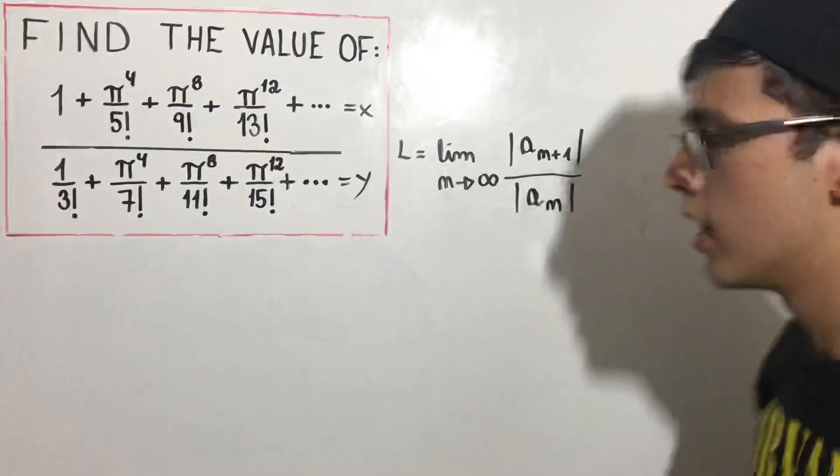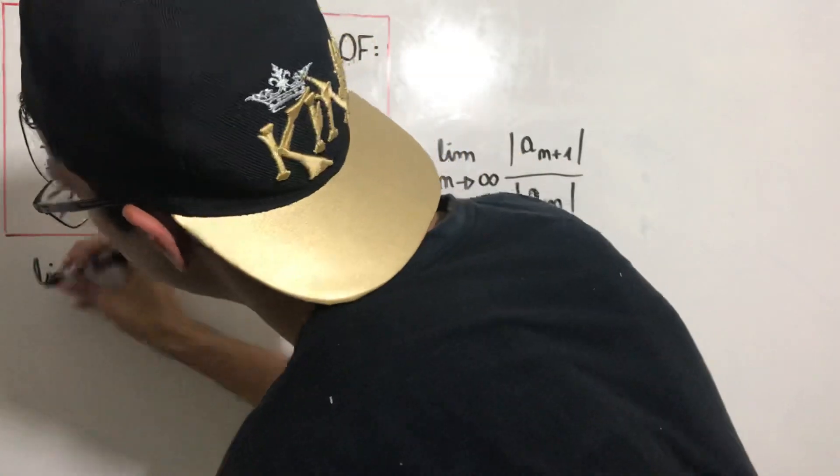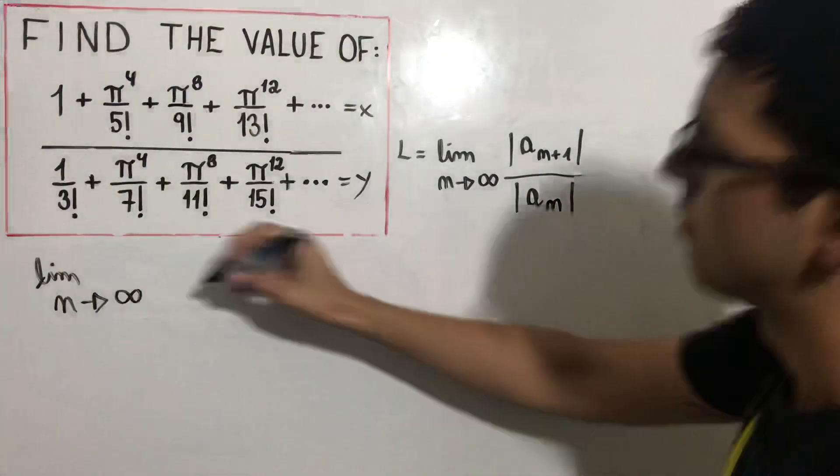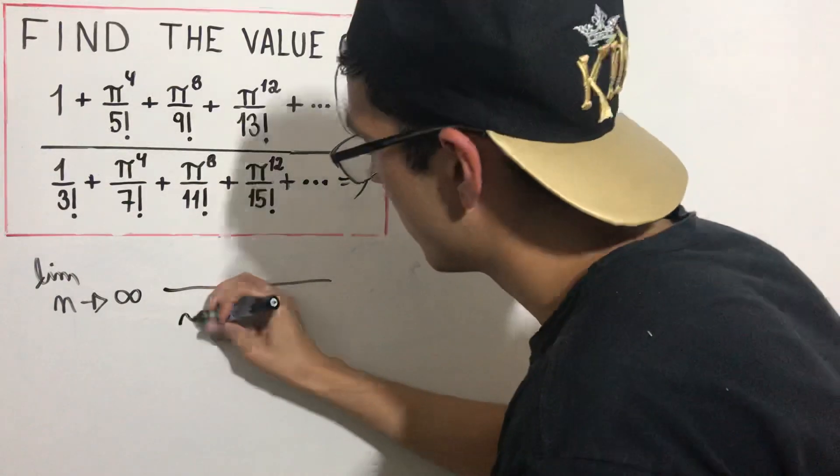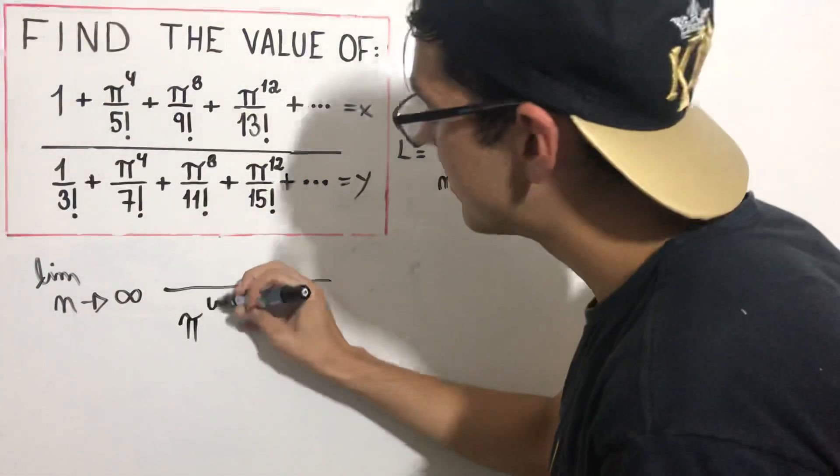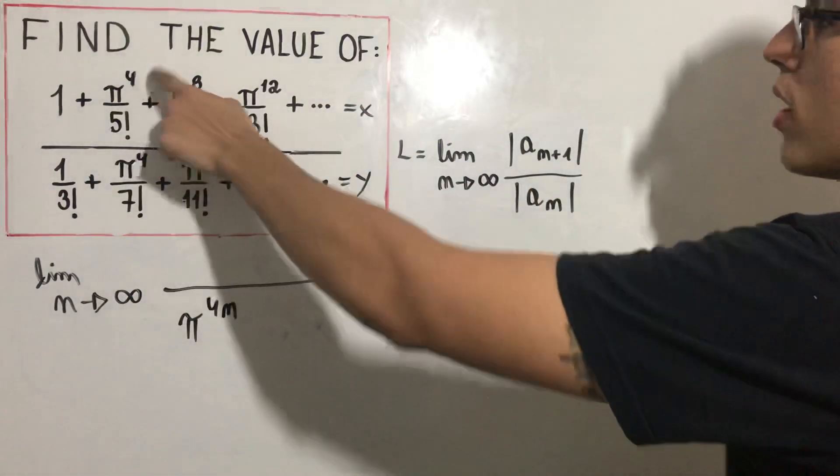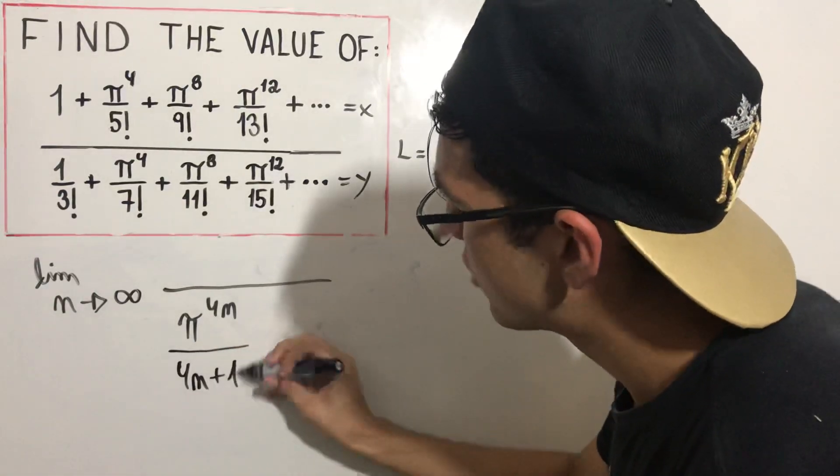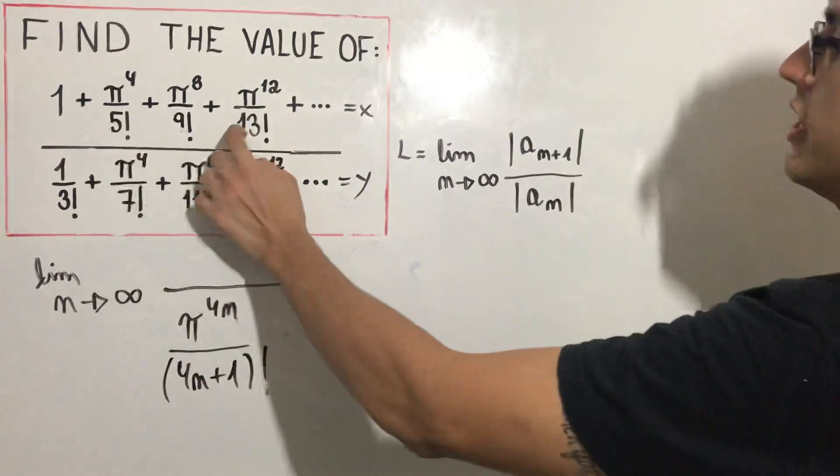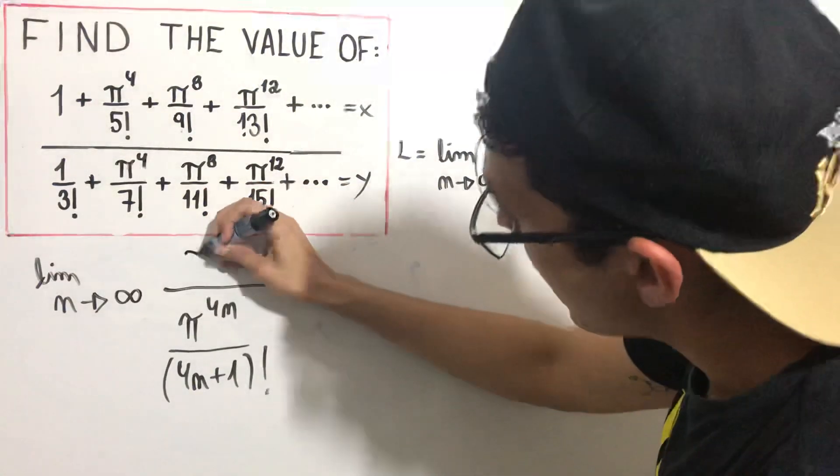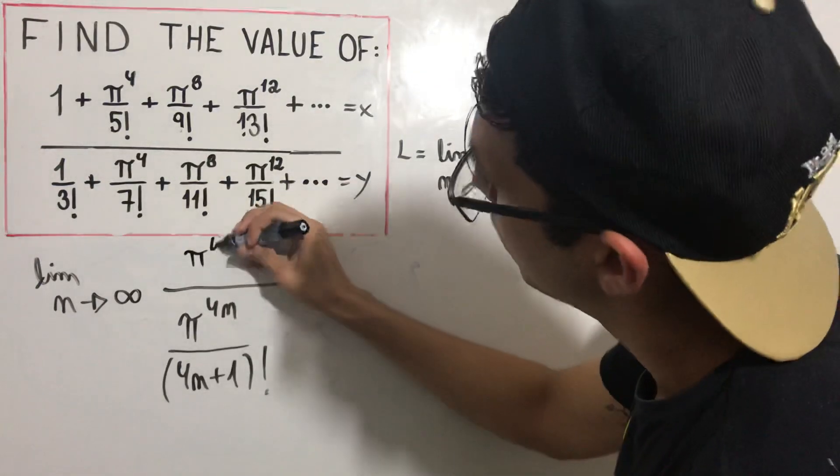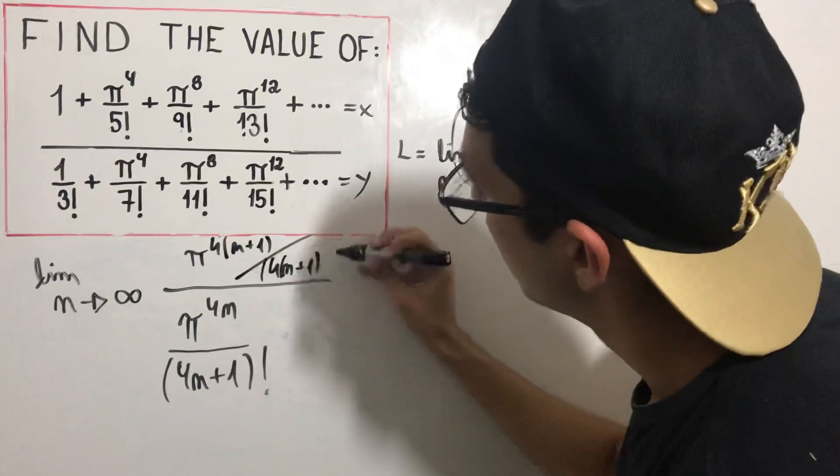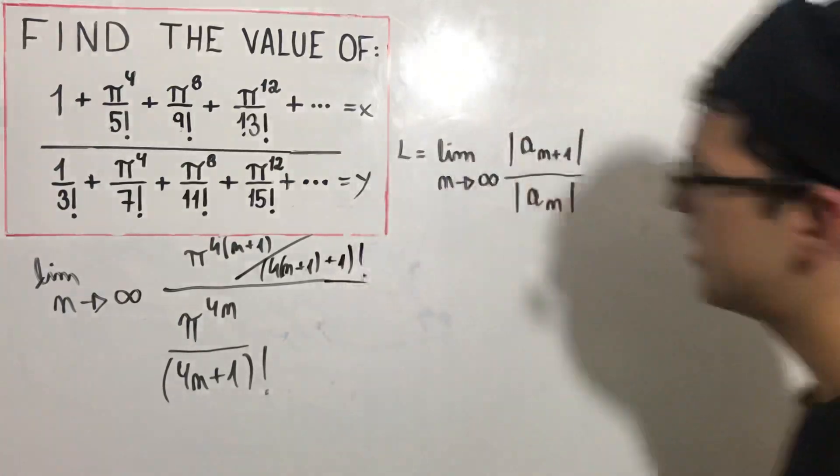So we want to take the limit as n goes to infinity of π to the power of 4n. Right? We can write up here: π to the power of 4n+4 over (4n+4+1) factorial. This is not very beautiful, but that's okay.